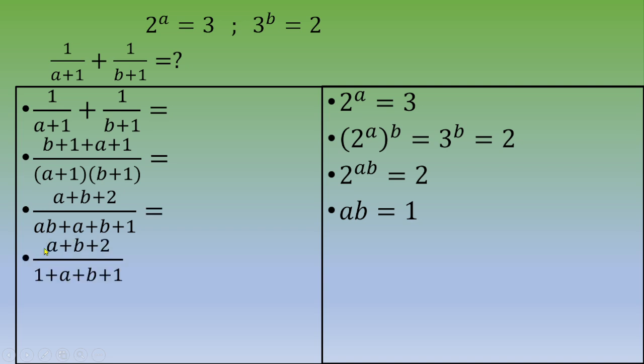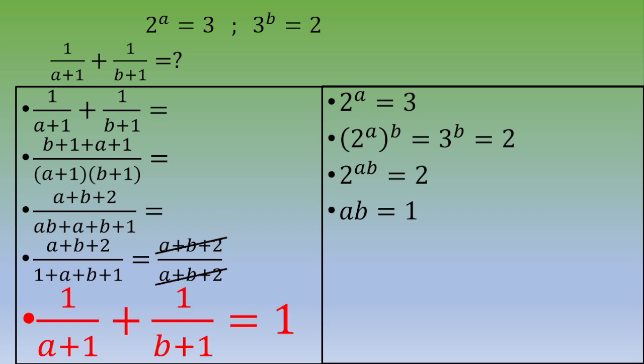You end up with a plus b plus 2 over 1 plus a plus b plus 1. If you do the math, you've got a plus b plus 2 over a plus b plus 2. This is the same quantity, so you can simplify and you end up with 1 over a plus 1 plus 1 over b plus 1 equals 1.